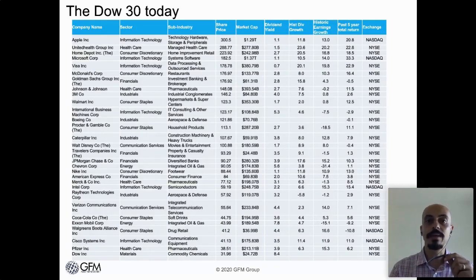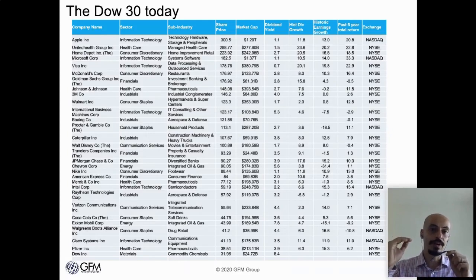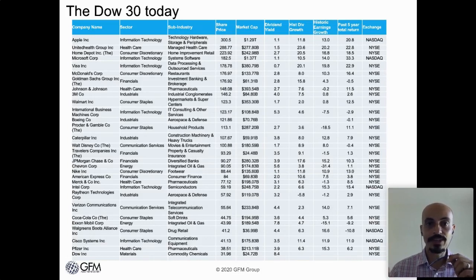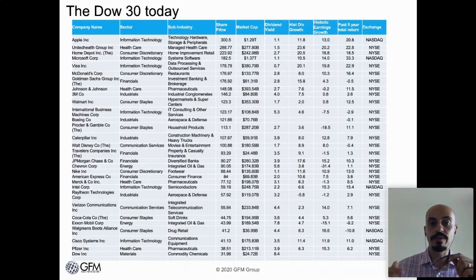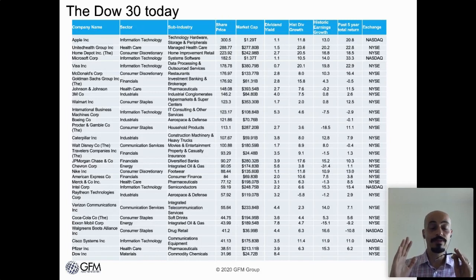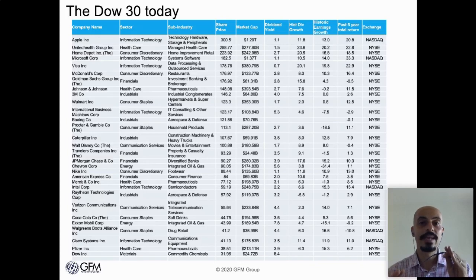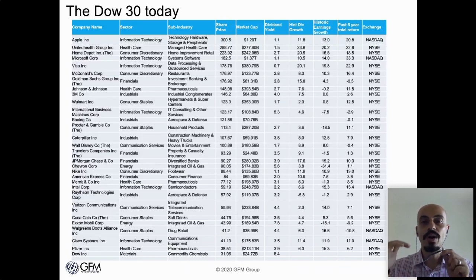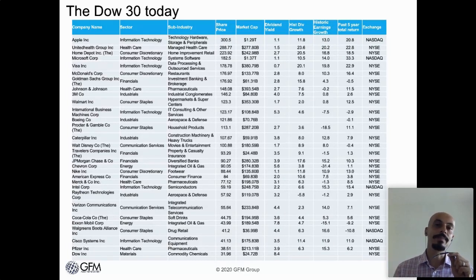One extreme example often shown is Goldman Sachs, which with a $176 share price but only a $61 billion market cap actually has about four times the weight of a Cisco Systems or a Pfizer, which are much larger companies. That is one of the biggest differences between the Dow Jones Industrial Average and the S&P 500, and why some people say the Dow is a bit outdated or irrelevant. That said, I'm going to show you why that price weighting really isn't as big a deal as some people make it out to be.